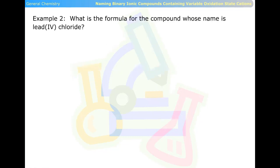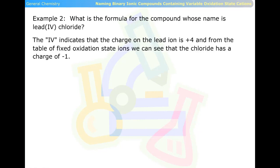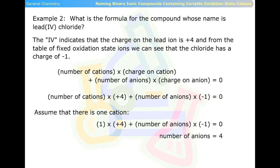Example two: What is the formula for the compound whose name is lead(IV) chloride? The IV indicates that the charge on the lead ion is positive four, and from the table of fixed oxidation state ions, we see that the chloride has a charge of negative one. Assuming one cation: one times positive four plus the number of anions times negative one equals zero. So the number of anions equals four. The formula for this compound is PbCl4.